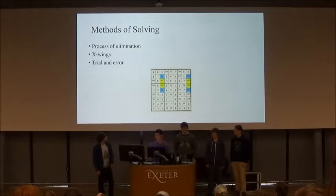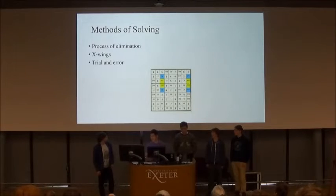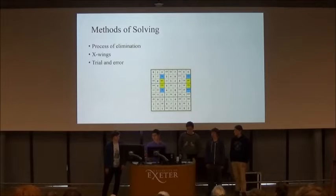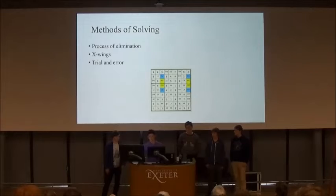For example, put 7 in the top left-hand side, and put 7 in the bottom right-hand side. Then the other two squares don't have to be 7 — they can be 9 and 6.